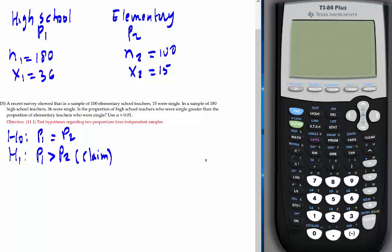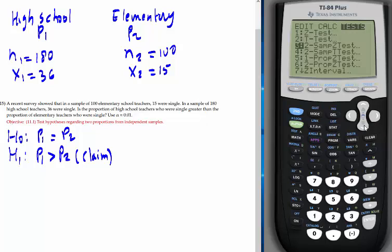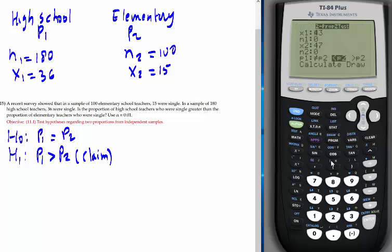How do you do this? Let me show you. Turn the calculator on, go to Stat, Tests. Since it's about a proportion, go to two-proportion Z-test. x1 is 36, n1 is 180, x2 is 15, n2 is 100. We're testing if P1 is greater than P2, so select greater than. Then go to calculate.